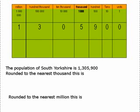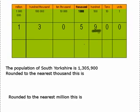The population of South Yorkshire is 1,305,900. We've got to round this number to the nearest thousand. To do that we need to look at the hundreds column. In our hundreds column we've got nine hundreds, so that means we have to round our number up. The 900 becomes another thousand, so the 5,000 will become 6,000.